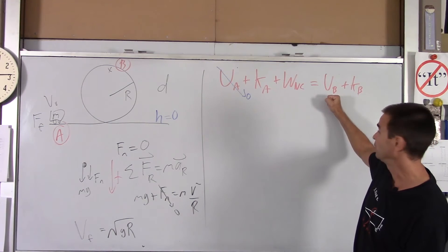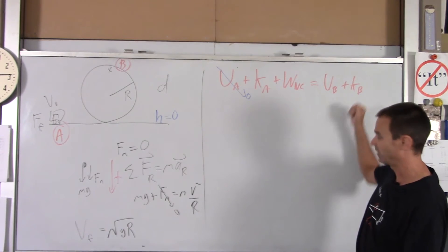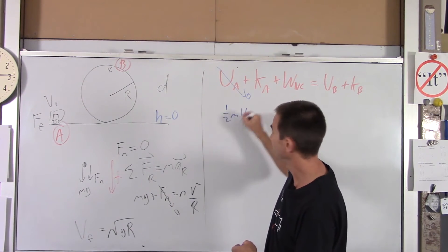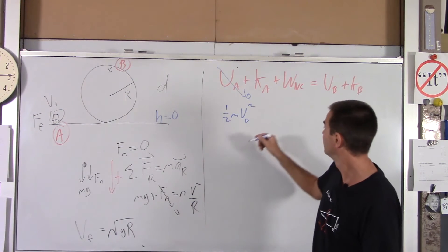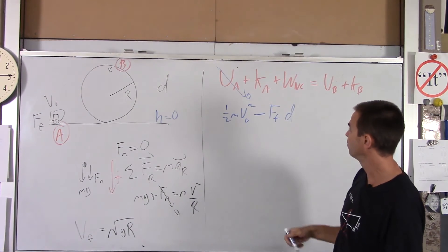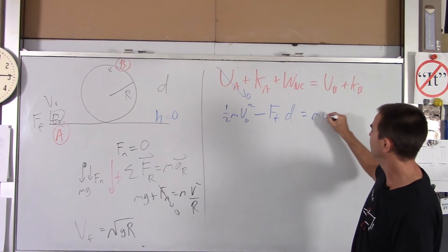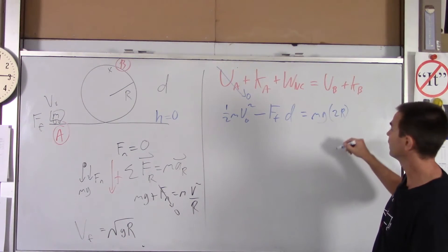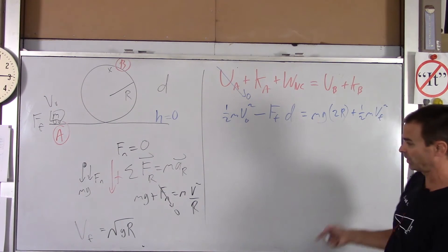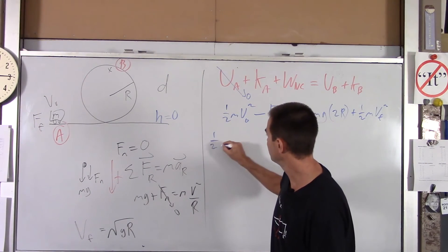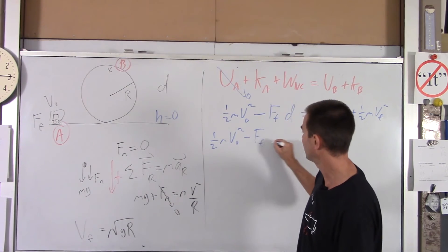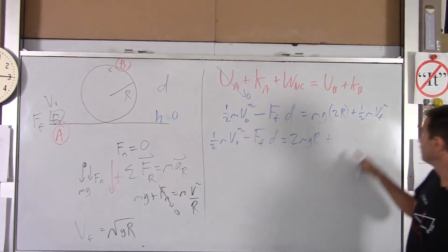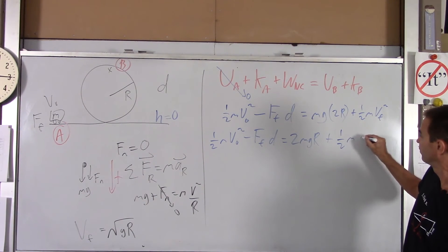At point B, the coaster has height equal to the diameter: 2R above the ground, giving potential energy mg(2R). It's also moving at the minimum velocity we found: v_final = √(gR), so kinetic energy at B is ½m(gR). Plugging everything in: ½mv₀² − F_friction·D = mg(2R) + ½m(gR), which simplifies to ½mv₀² − F_friction·D = (5/2)mgR.